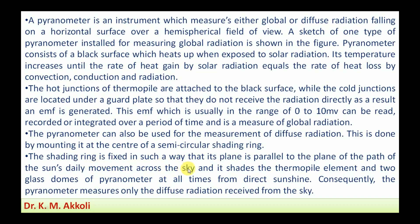The shading ring is provided so that direct radiation will not fall on the black surface — only the reflected and deflected radiation will fall on the measuring black surface. The shading ring is fixed such that its plane is parallel to the plane of the sun's daily movement across the sky. It shades the thermopile element and the two glass domes of the pyranometer at all times, so the pyranometer measures only diffuse radiation received from the sky.